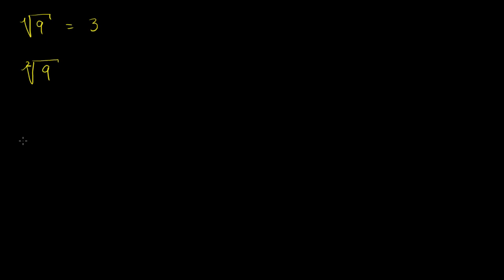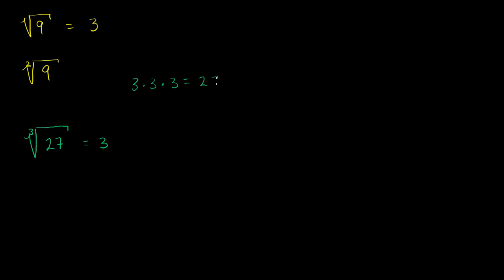For example, this is called the cube root, or the third root of 27. What is this? Well, this is some number that if I take it to the third power, I get 27. The only number that if you take it to the third power you get 27 is 3. 3 times 3 times 3 equals 27 — 9 times 3 is 27.